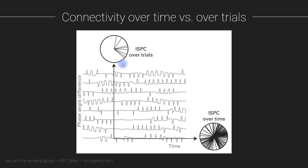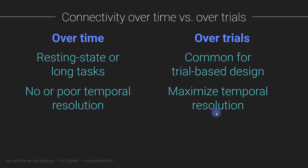When should you compute phase synchronization over trials, and when over time? Computing synchronization over time makes sense if you have a resting state task or really long tasks. Resting state obviously, because you don't have trials — there is no inherent repetitive trial structure, so it doesn't even make sense to compute synchronization over trials for resting state data. This could also apply to long tasks.